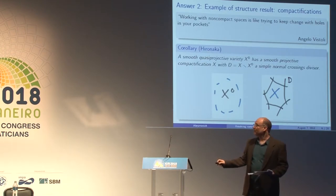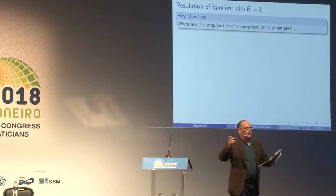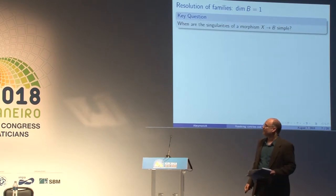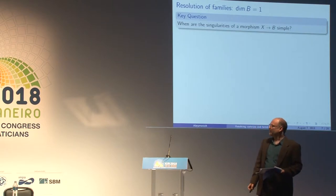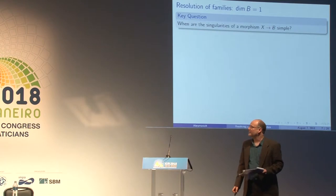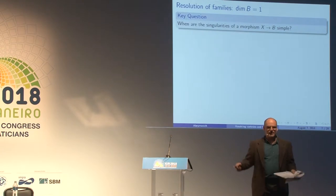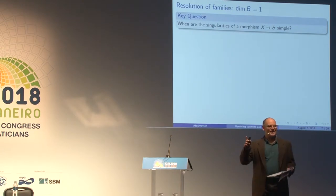Let's ask ourselves: what can we say about resolving singularities of a family of varieties? This is something I've been obsessed about for quite some time, and I hope to convince you that it's interesting. The key question to begin with is: when do we agree that the singularities of a morphism are simple? When do we agree that all the fibers are as simple as possible?